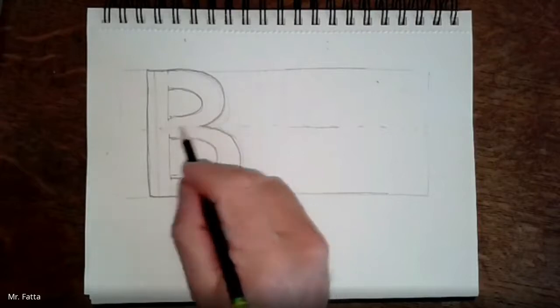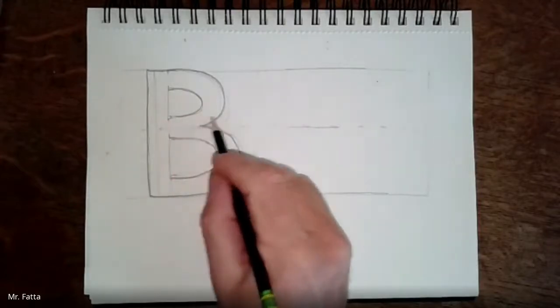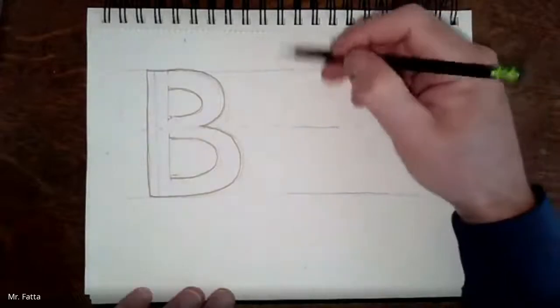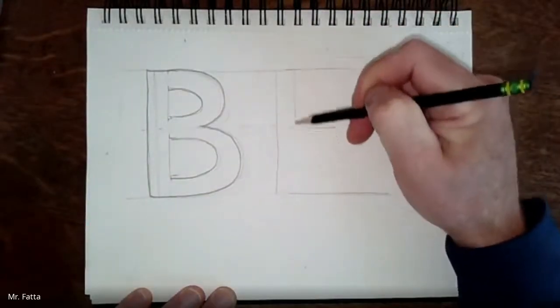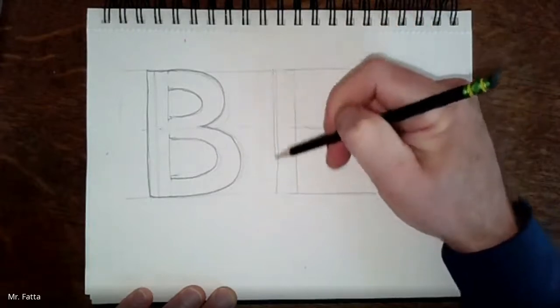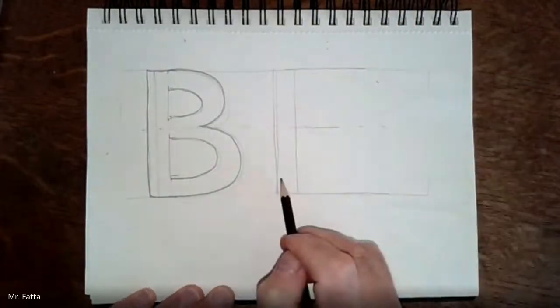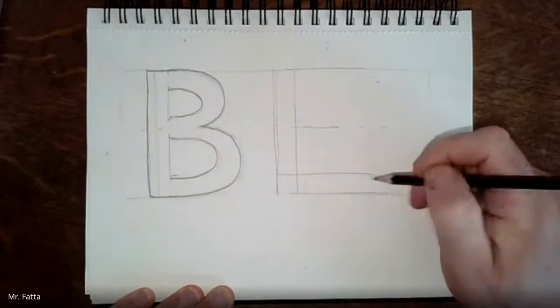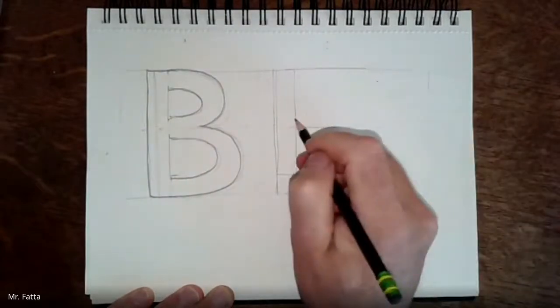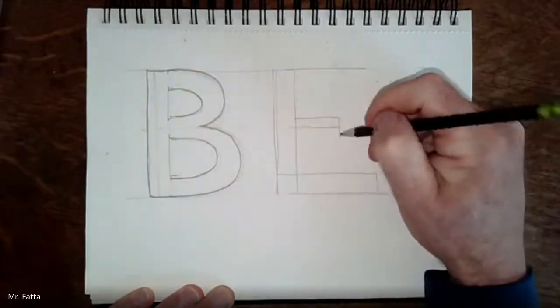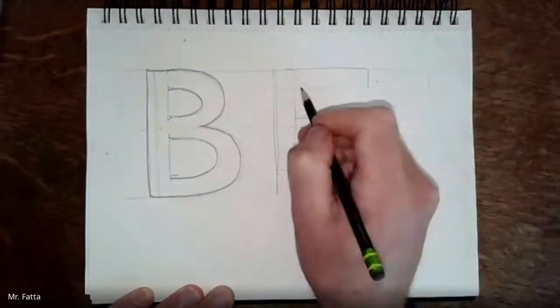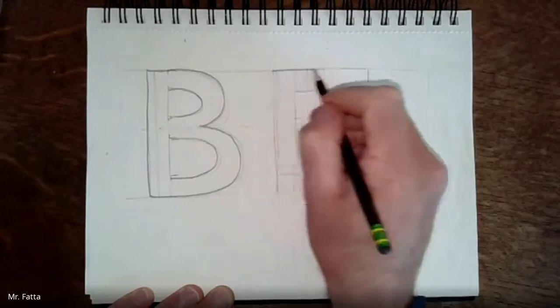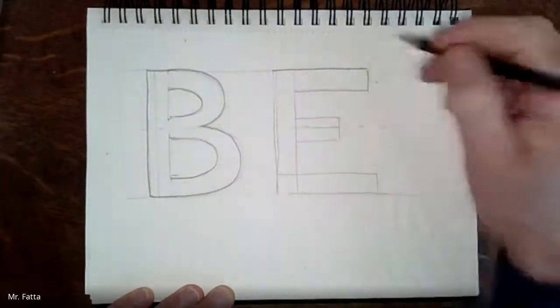The E now—E is easy because it's just rectangles, just rectangles. Think of each stem as a rectangle. Okay, and consistency is the important part here. Consistency—they're the same height.